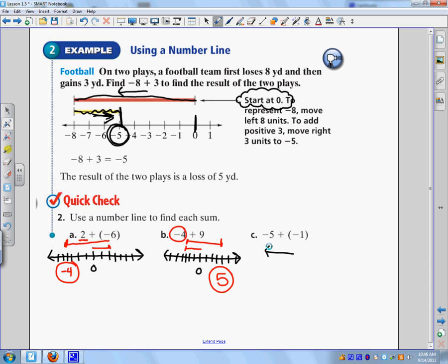Lastly, I'm going to draw my number line. Start at zero. And I start at zero. I go negative five. And then I go negative one more. So my answer is negative six.